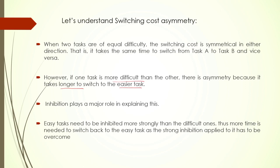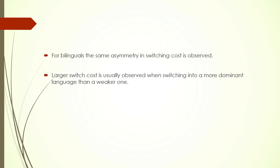Why is it harder to switch back to the easier task? This has been explained through inhibition. The easy task needs to be inhibited more strongly when performing the difficult task, because the easy task is always more readily available. Once a larger amount of control mechanism has been applied to suppress the easier task, it becomes more difficult to bring it back into action. More time is needed to overcome the strong inhibition applied.